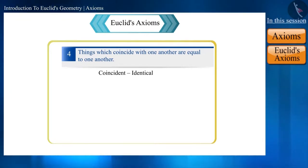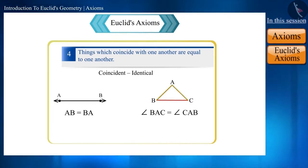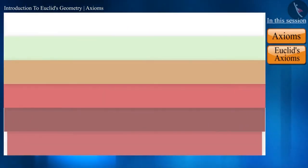According to Euclid's fourth axiom, things which coincide with one another are equal to one another. Coinciding or identical - if we say that they are the same, then they are equal to each other. Like line AB equals line BA because these two names represent the same line. And in this triangle ABC, angle BAC equals angle CAB because these two names represent the same angle.